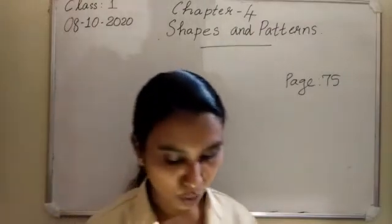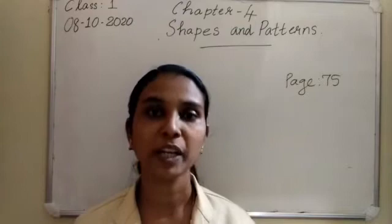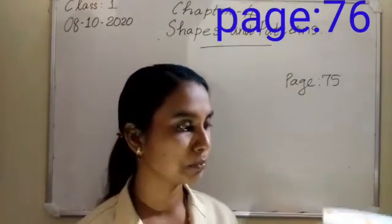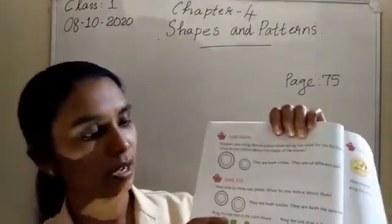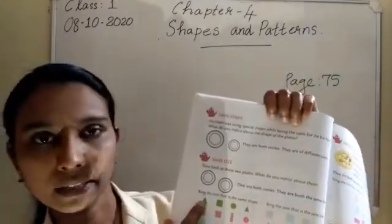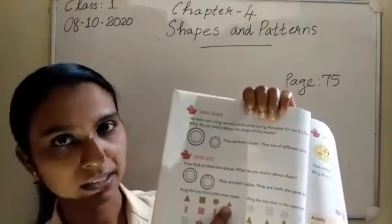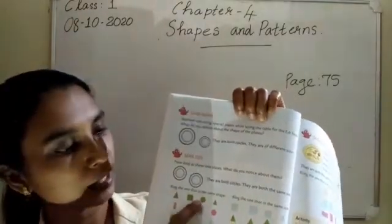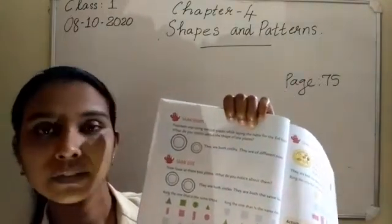You have to do your textbook page number 76. It is given a square shape. Circle the one that is the same shape. Here there is a triangle - which one has the same shape? Circle it. Then here is a rectangle - circle the same shape. The next one is a square - circle the same one.